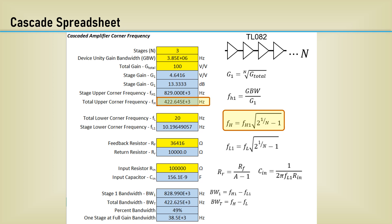As I said earlier, we want the total lower corner frequency to be 20 Hz. We get a calculated individual stage lower corner frequency of about 10.2 Hz. The spreadsheet calculates the values for the feedback resistors as well as the input resistors and capacitors. The individual stage bandwidth and total bandwidth is calculated. The percent bandwidth achieved after the three stages is cascaded is only 49% of the individual stage.